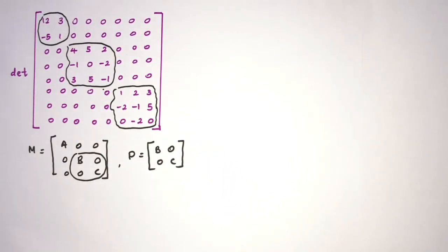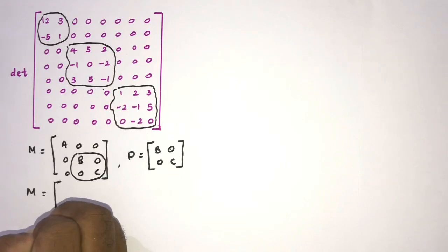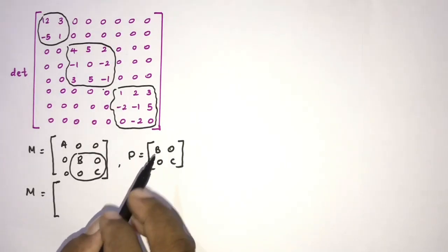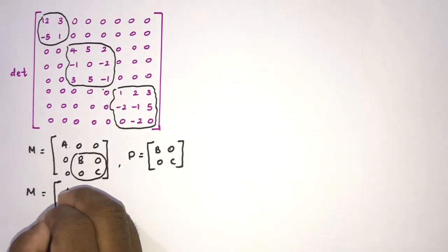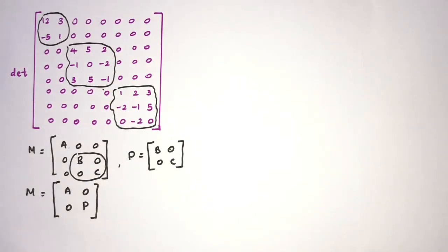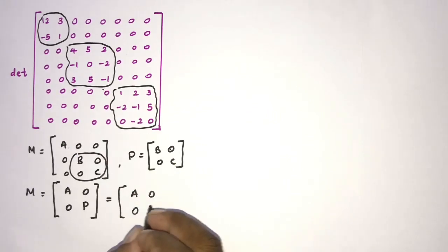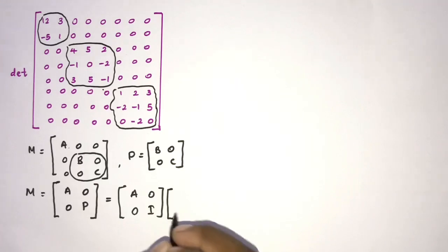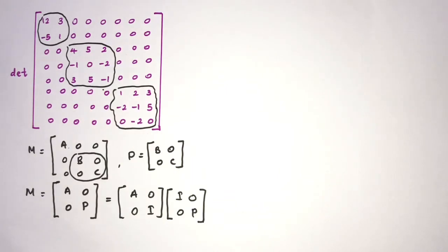Well, now we can write M equal to, here we have now P equal to B, 0, 0, C. So here A, 0, 0, 0, now instead of this part we have P. Then we can write this matrix as a product of two matrices like A, 0, 0, I times matrix I, 0, 0, P.